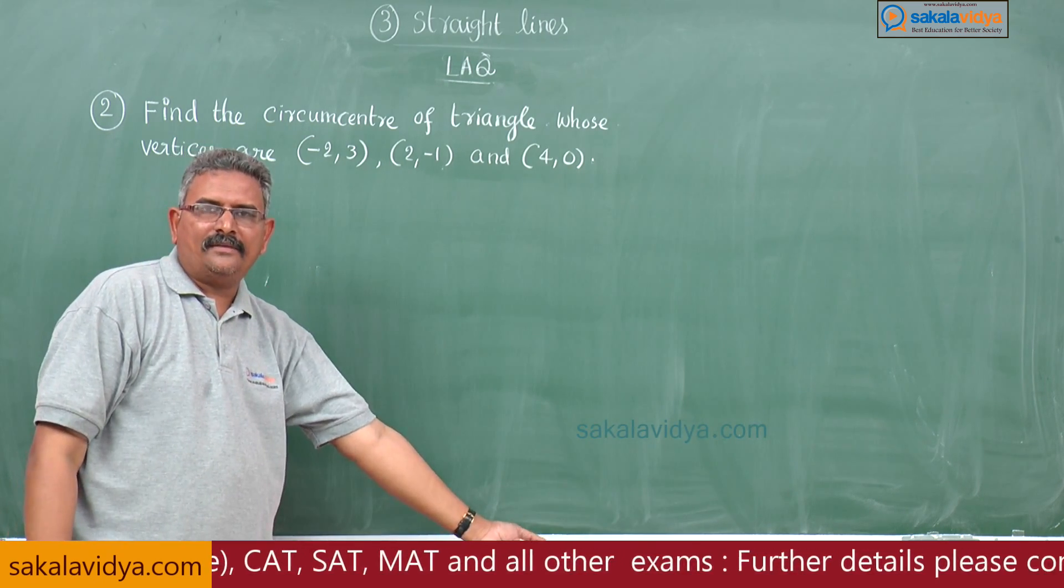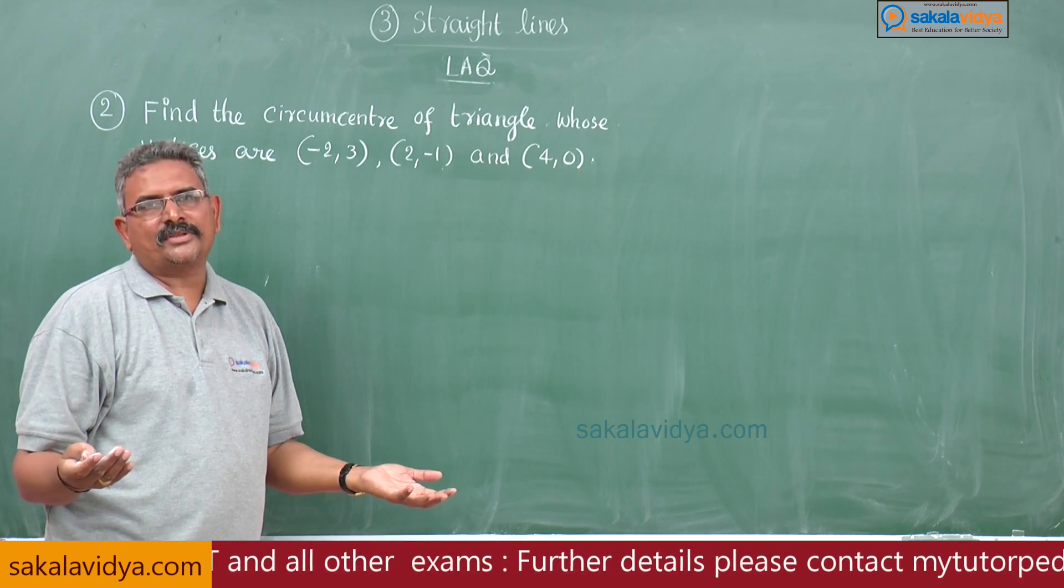Circumcenter is the point which is equidistant from the vertices of the triangle. Suppose the given vertices are A, B, C. Let S be the circumcenter. Then SA = SB = SC. First, we consider SA = SB to find one equation. Then consider SB = SC to find a second equation. Solving 1 and 2, we get the S value, which is the required circumcenter.